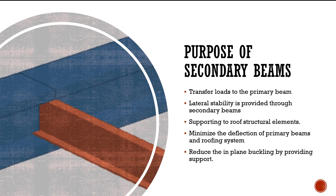Secondary beams also minimize the deflection of primary beams by providing lateral support at regular intervals, which reduces deflection for the main beams. They also reduce the total buckling length of the beam by providing support at certain intermediate levels. This is one of the major purposes of using secondary beams in the structural system.